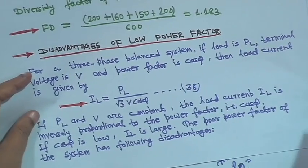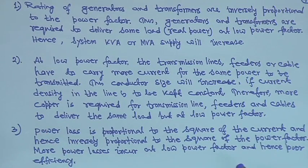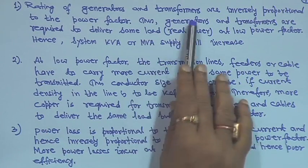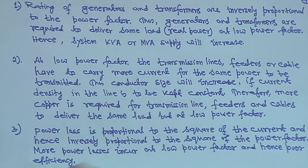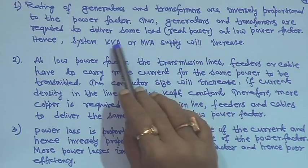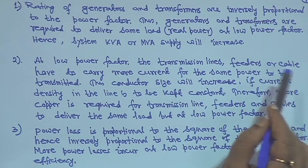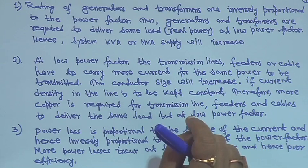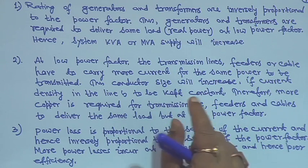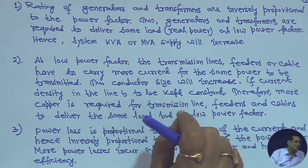Number one: the ratings of generators and transformers are inversely proportional to the power factor. Thus, generators and transformers required to deliver the same load — that is, real power — at low power factor will need higher kVA or MVA supply, because reactive power will increase.